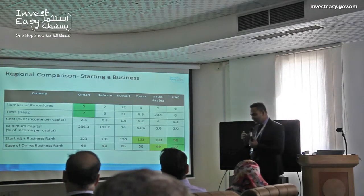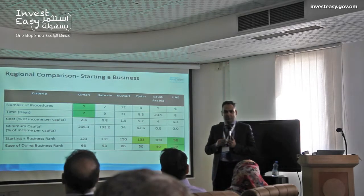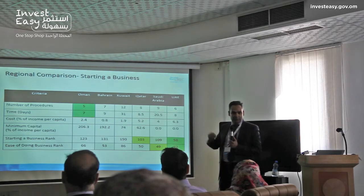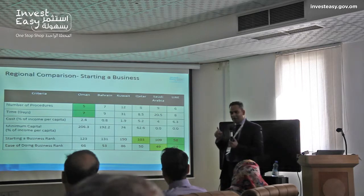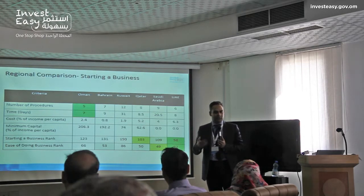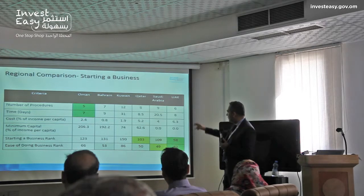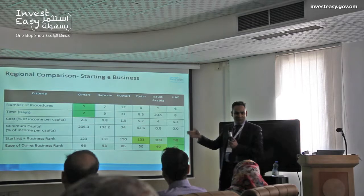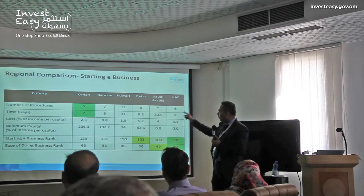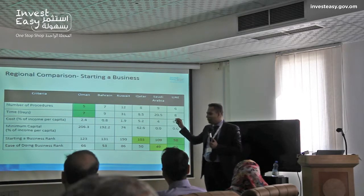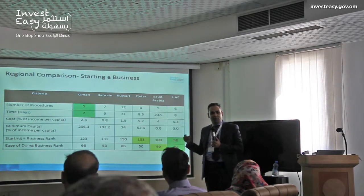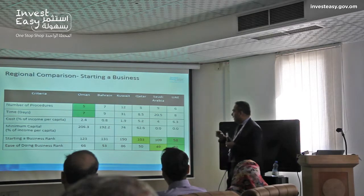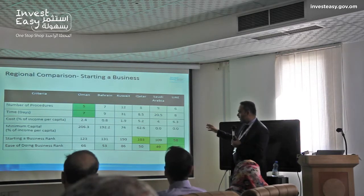If you read today morning's Times of Oman report, this is exactly what they tried to highlight. But probably one thing they did not highlight is that yes, Oman is ranked 66 and is probably the second toughest place to do business in the GCC — but if you look at the starting a business indicators, Oman has the best number of procedures and the fastest time for doing business among all the countries. The difference comes in the minimum capital requirement and the cost of income.